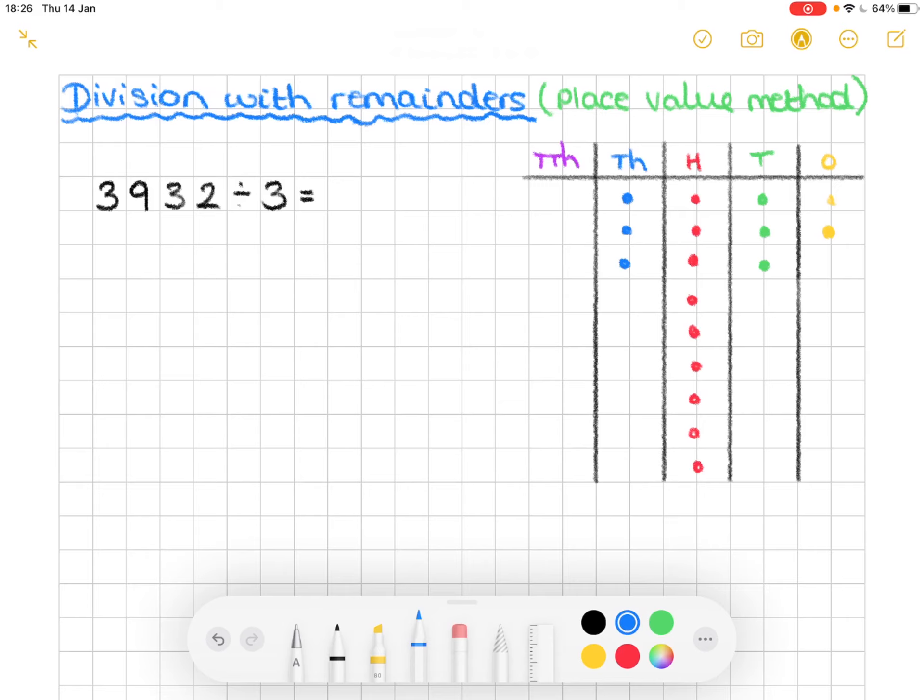So the process is the same as it has been the past few days. The only difference comes when we get to the end of this question. So just like before, we're dividing by three. So we start off with our thousands. We start off on the left.